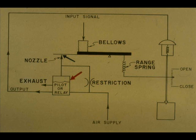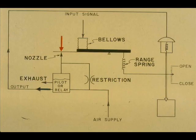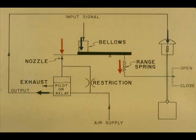By adding a pneumatic relay and a flapper nozzle assembly, we can affect a change in valve stem position for a change in pressure to the input bellows. An increase in pressure in the bellows causes the flapper to cover the nozzle. This immediately causes full output from the pilot. The increased air on the control valve diaphragm moves the stem downward, pulls tension on the spring, and restores the flapper nozzle relationship.